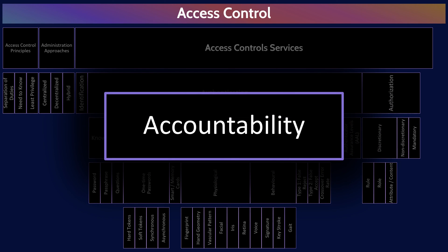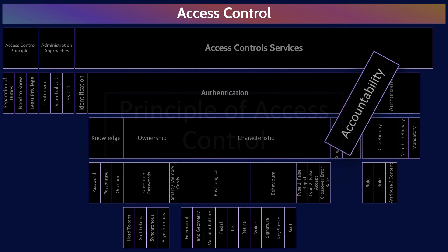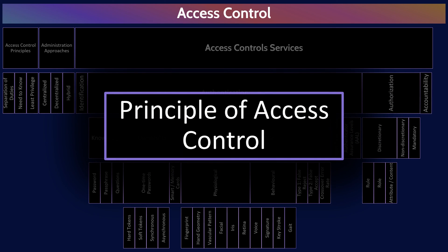Accountability is the final and most important access control service. To have security, we must ensure users are accountable for their actions on a system. Because accountability is the most important access control service, we give it a special name: the principle of access control. So remember — the principle of access control is accountability, and accountability is the principle of access control.